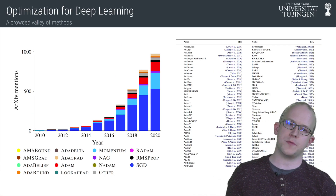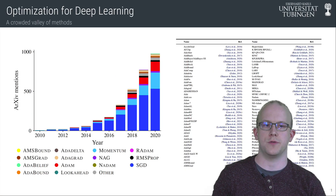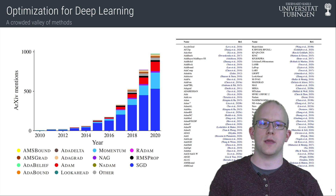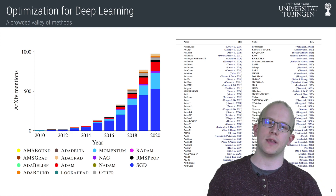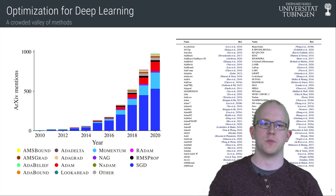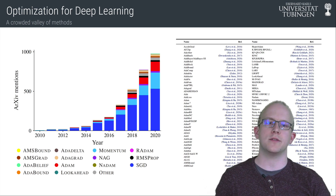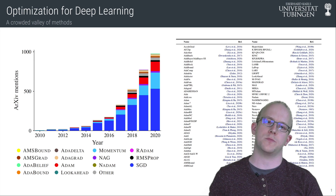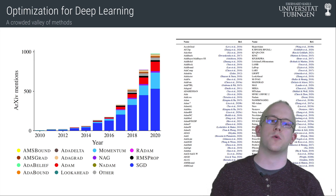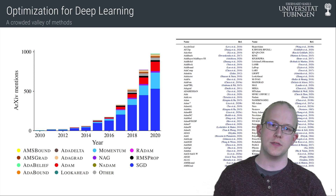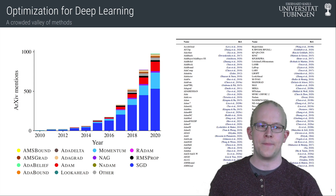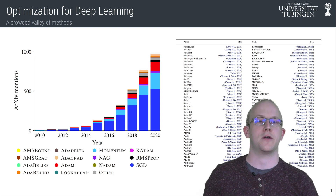Ten years ago there were three main optimization methods used for training deep neural networks: stochastic gradient descent, momentum, and Nesterov momentum. Since then, stochastic optimization has been a focal point of research and resulted in an ever-growing list of methods. In our paper we list more than 150 optimization methods that have been designed for or applied to deep learning, and this list is still most likely incomplete.